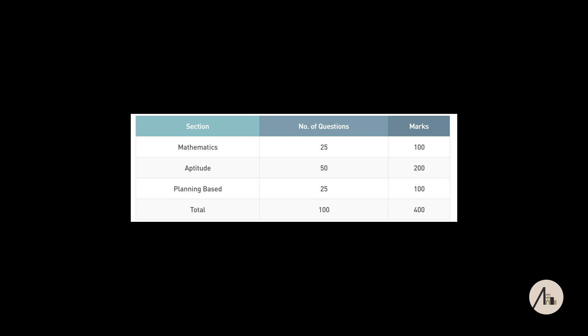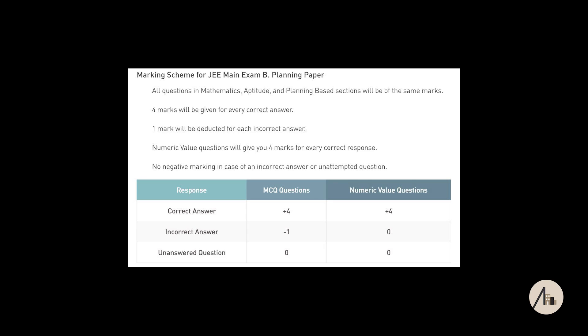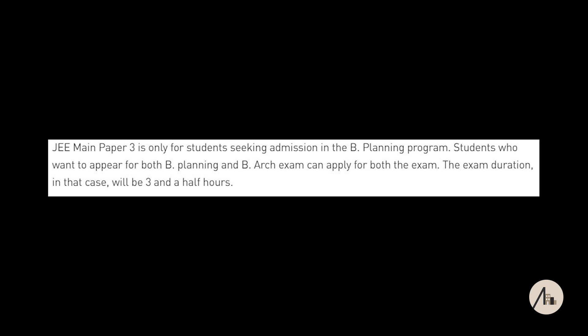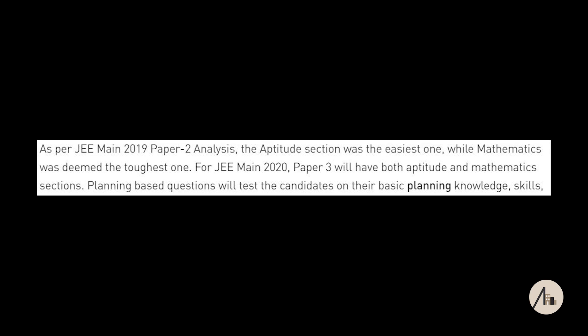The planning paper has three subsections. Part 1 contains Mathematics with 20 MCQs and 5 numerical answer type questions. Part 2 is Aptitude, which contains 50 MCQs and carries 200 marks. Part 3 is related to planning only, consisting of 25 MCQs carrying 100 marks. For MCQs, a correct answer awards +4 marks and an incorrect answer deducts -1 mark. For numerical answer type questions, a correct answer gives 4 marks and an incorrect answer gives 0. The aptitude and math sections are common for both architecture and planning, while the third part is different for B Planning.